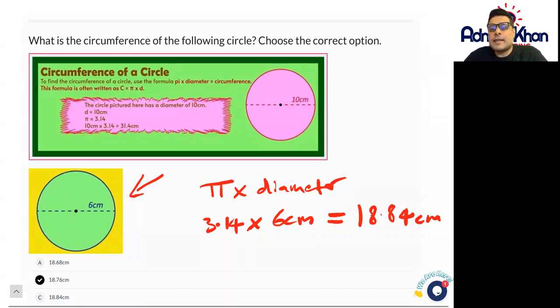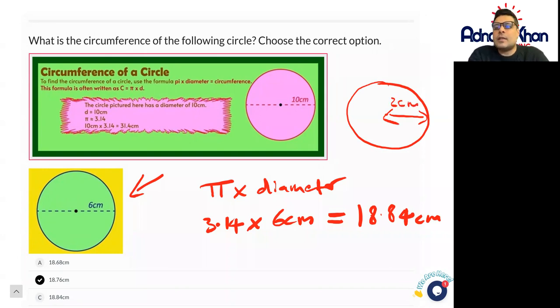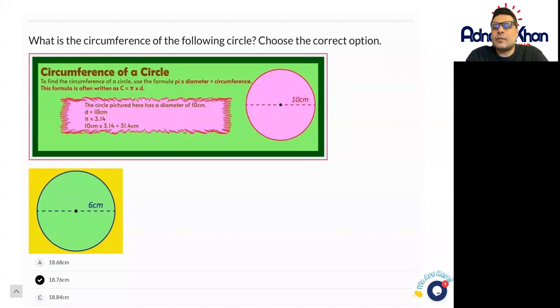If you have a radius, for example, then you will do it slightly differently. Let's say we have a question and we have a radius that's only been provided for us, and let's say the radius is 2 centimeters. In this case, what we're going to do is we're going to use a slightly different formula. The radius is going to be 2 centimeters, and we need to work out what the circumference is.